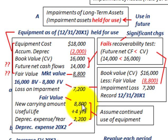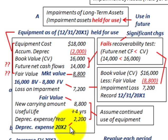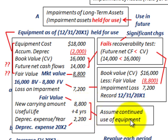The fair market value of $8,800 is our new carrying amount, and we use that to determine future depreciation expense, since we're holding the asset for use. In this case, it has a useful life of four years, so dividing $8,800 by four gives us a depreciation expense of $2,200 per year for 20X2 and the next four years.